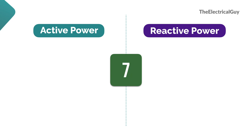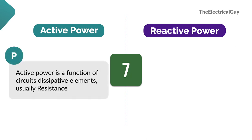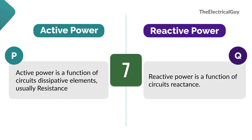Active power is a function of the circuit's dissipative elements, usually resistance, whereas reactive power is a function of the circuit's reactance. This means you will see active power in circuits with dissipative elements like resistance — for example, a lighting system — whereas you will see reactive power in circuits that have reactance, for example, circuits containing reactors.